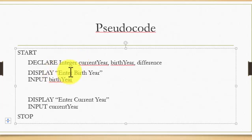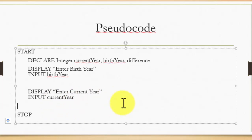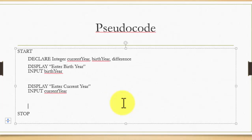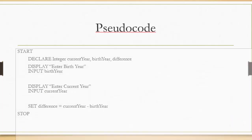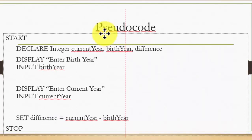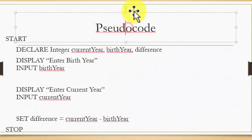So I'm accepting birthYear and accepting currentYear — those are the two sets of inputs. Now I need to calculate my output. I'll write the set statement, which is a pseudocode statement: set difference equals currentYear minus birthYear. Let me increase the size of the text just so you can see it a little better.